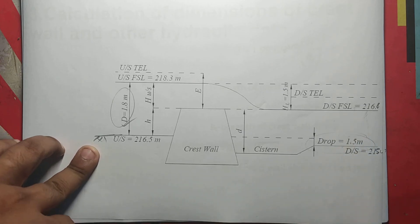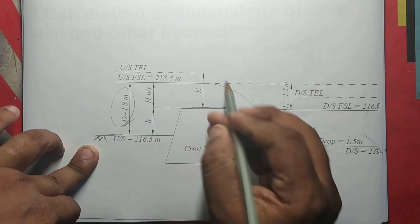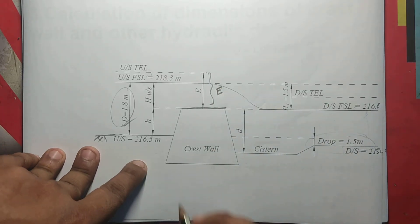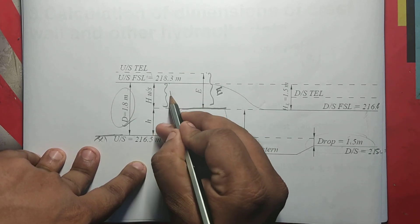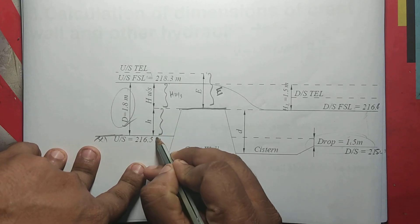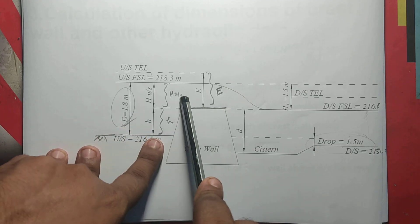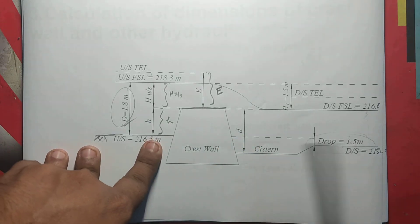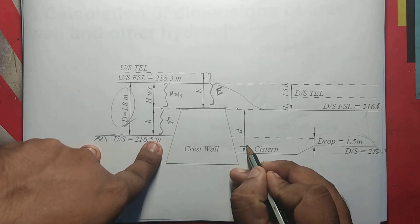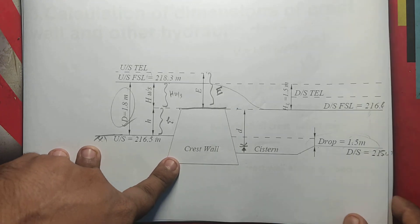Upstream TEL: upstream TEL compared to the top level. The upstream level with the crest — upstream bed level is given as 216.5m with a depth of 1.8m, so we can get the upstream full supply level. From the crest on the downstream side, we can get the drop. We can get it from here and calculate the drop.